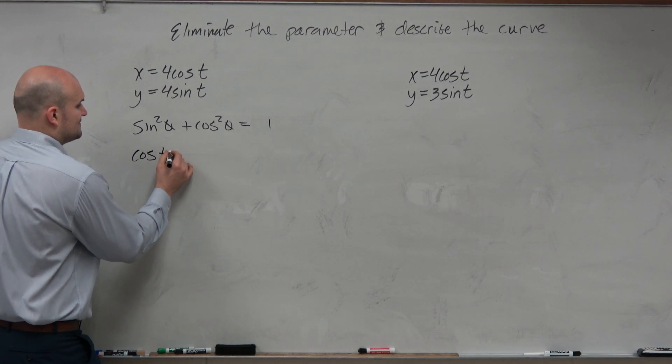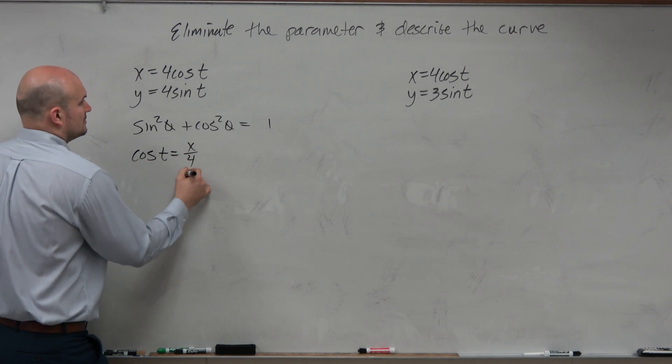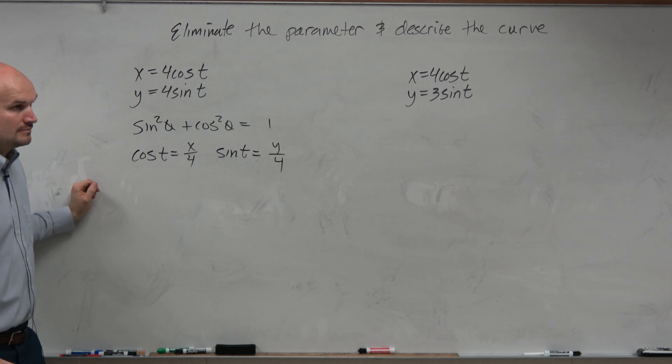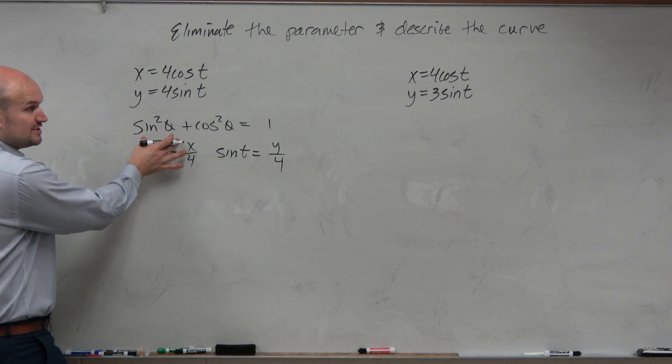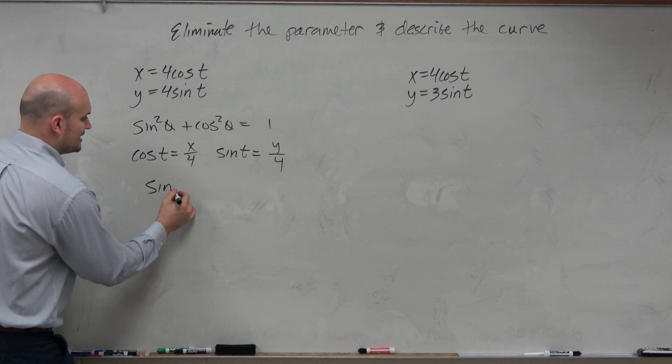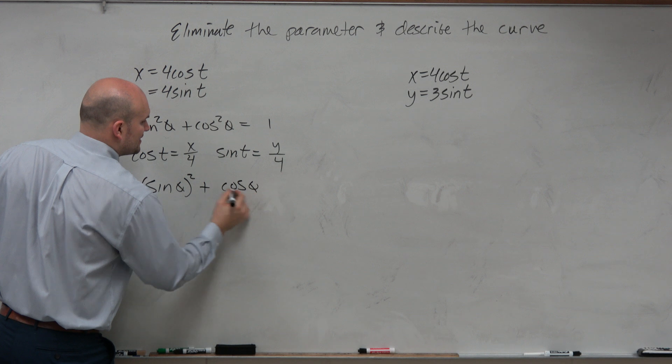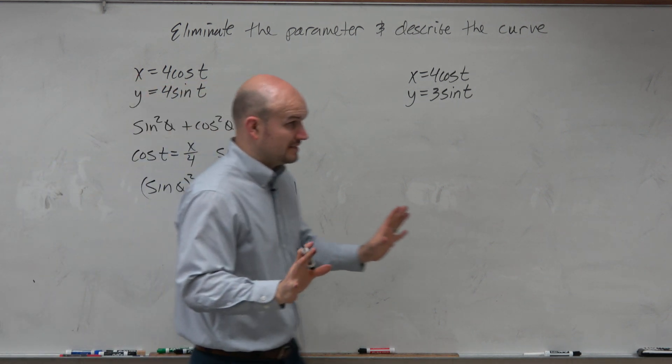We could say cosine of t is equal to x over 4. And sine of t is equal to y over 4. Now, again, what do these really represent? Remember, this is really, guys, sine of theta squared plus cosine of theta squared equals 1. Yes?